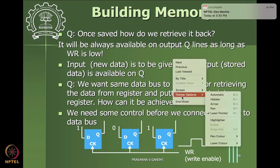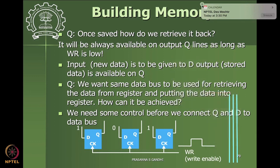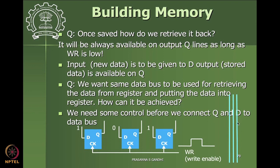To retrieve a value from the same data bus and also store a different value using the same data wires, we want to use a single data bus for both giving values to memory and taking values out. For this, we need the Q and D terminals connected to the data bus. But if both are directly connected, they'll be shorted, causing data to get messed up due to feedback — so we need control over whether data is being stored or retrieved.